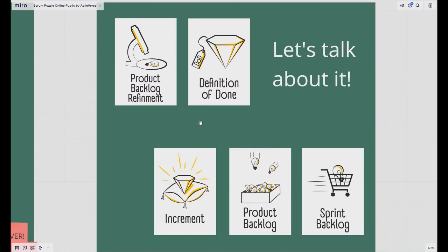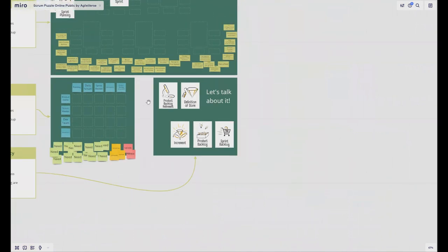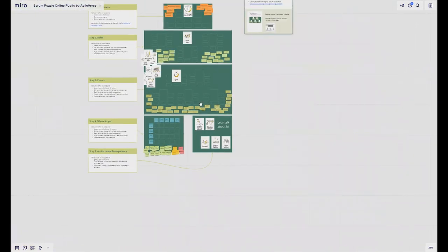Another two things on this step: product backlog refinement and definition of done, which are good practices in Scrum and are designed for transparency purposes. The task is the same. Discuss why it's needed, how does it work, what is it, what's the purpose, how does it help make things more transparent. That's all. That is all of Scrum Puzzle details.